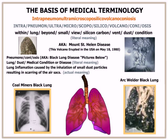Now let's look at these two pictures at the bottom. The picture to the right is referred to as arc welder's black lung and the picture to the left is coal miner's black lung. The term that refers to these two conditions would be pneumoconiosis, and it literally means a condition of dust that affects the lungs. The actual meaning would be any disease of the lung caused by chronic inhalation of dust, usually mineral dust of occupational or environmental origin. Two specific types of pneumoconiosis would be asbestosis and silicosis.